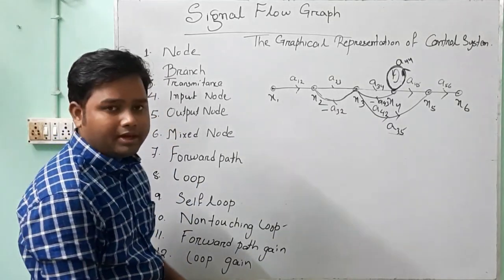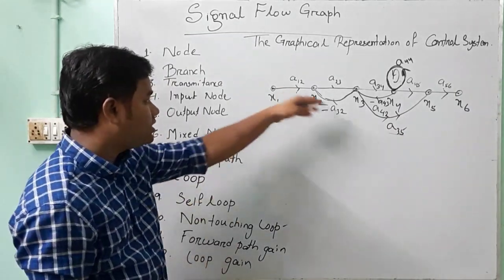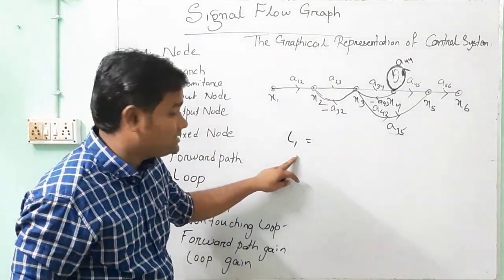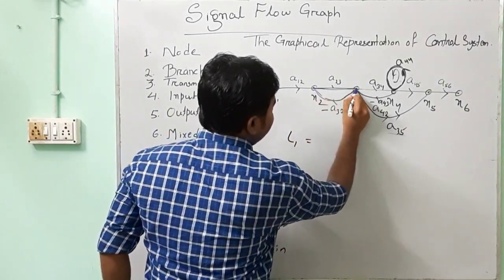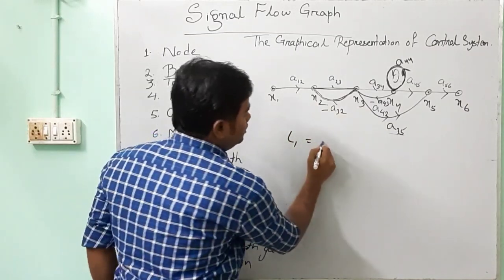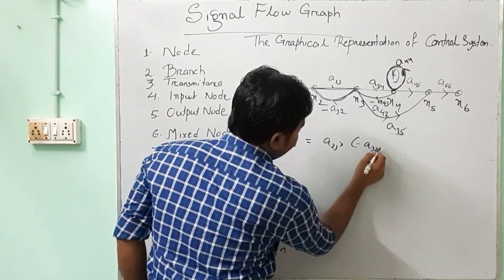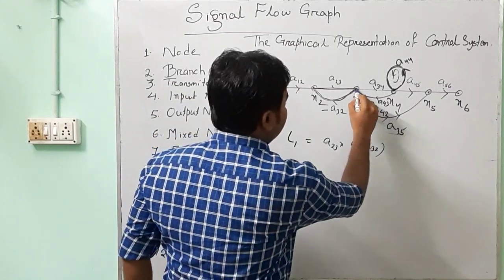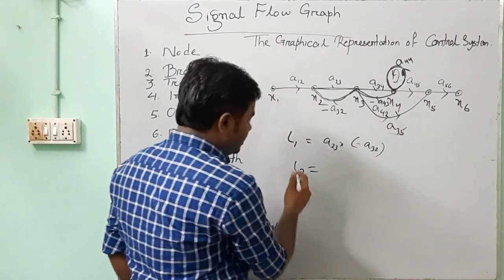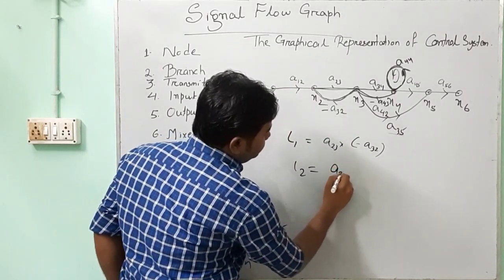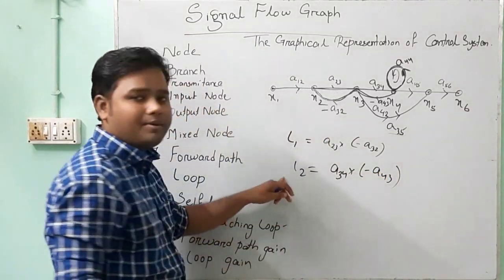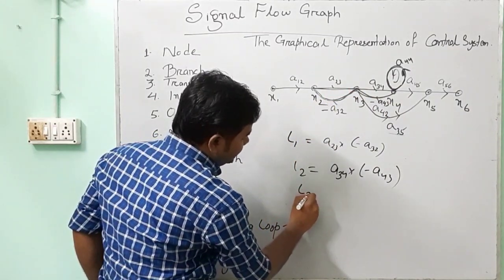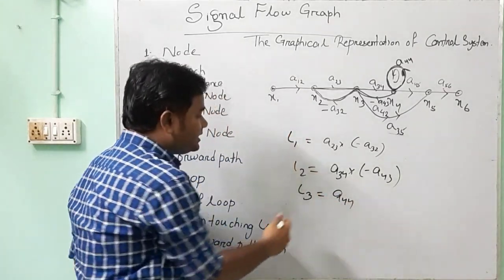Next, loop gain. We have three loops. Loop 1 starts from X2 to X3 and back to X2, so L1 = A23 × (−A32). Loop 2 starts from X3 to X4 and back to X3, so L2 = A34 × (−A43). Loop 3 is the self-loop at X4, so L3 = A44. These are the three loop gains.